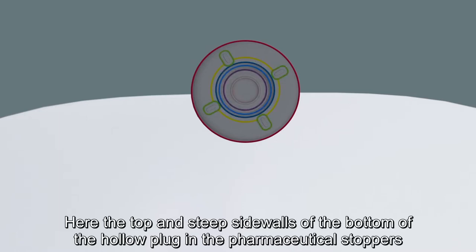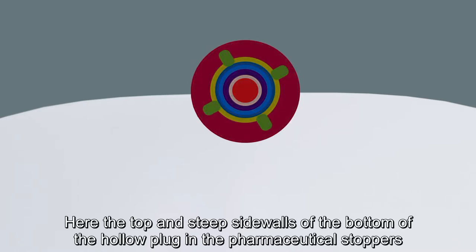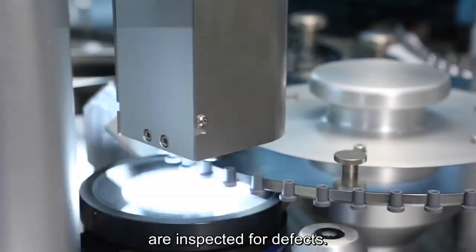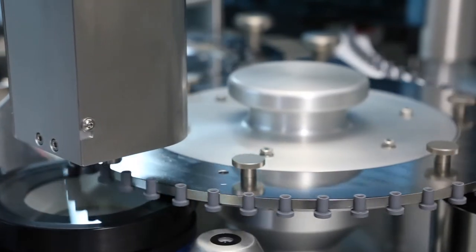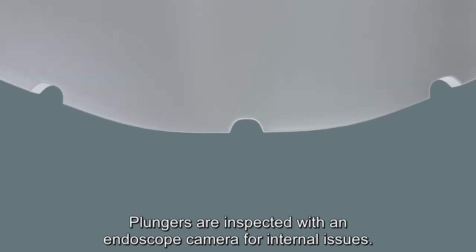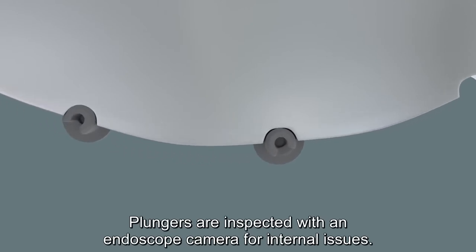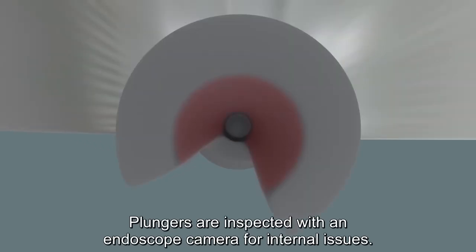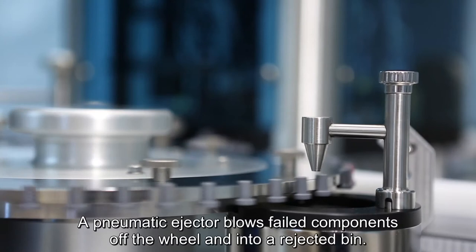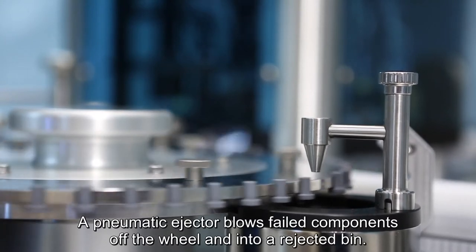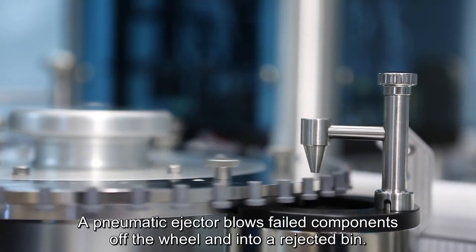Here, the top and steep sidewalls of the bottom of the hollow plug in pharmaceutical stoppers are inspected for defects. Plungers are inspected with an endoscope camera for internal issues. A pneumatic ejector blows failed components off the wheel and into a rejected bin.